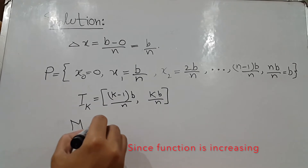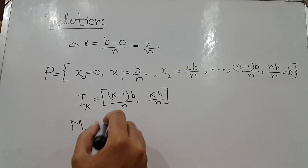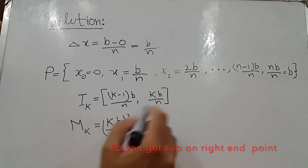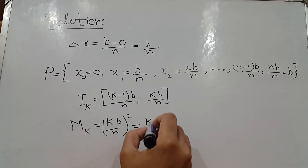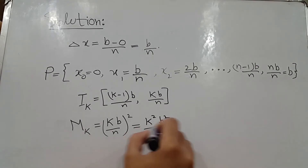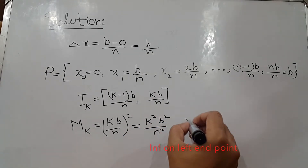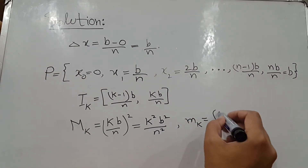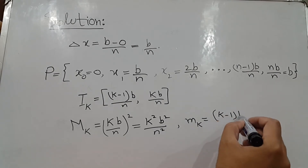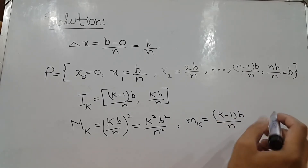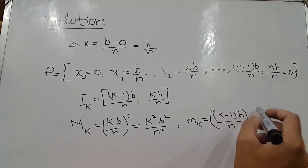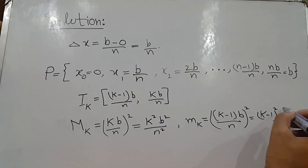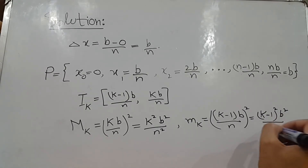The value of M_k (the supremum on the k-th interval) is equal to (kb/n)². The value of m_k (the infimum on the k-th interval) is equal to ((k−1)b/n)².